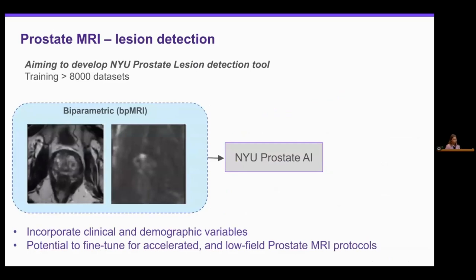Our group is aiming to develop our own prostate lesion detection tool because we have a lot of data, and a model trained specifically for our protocols is likely to perform better for our images and patients. We can also incorporate clinical and demographic variables like PSA, age, race, and BMI into the model. We're also interested in fine-tuning this model for accelerated protocols — we heard in the first talk about accelerated imaging with deep learning reconstruction — and also for low-field prostate protocols.